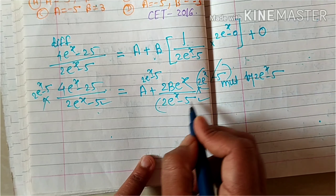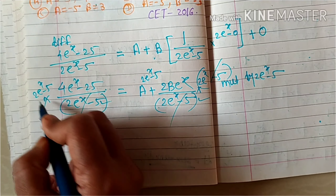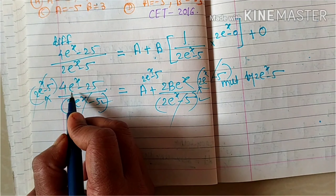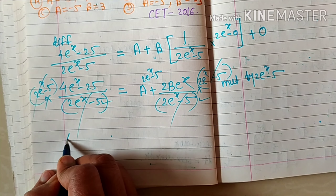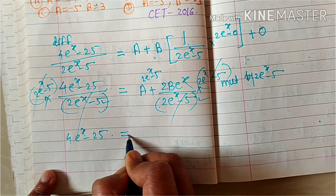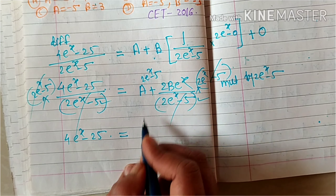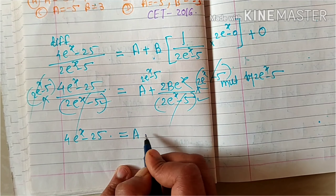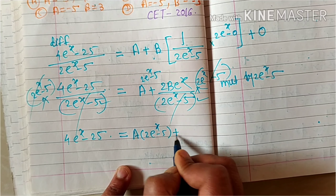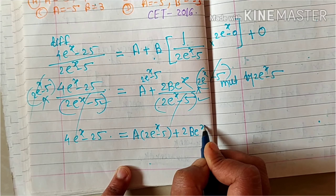When we multiply through by (2e^x minus 5), these denominator terms cancel on both sides. What remains on the left hand side is 4e^x minus 25, and on the right hand side is a into (2e^x minus 5) plus 2b·e^x.